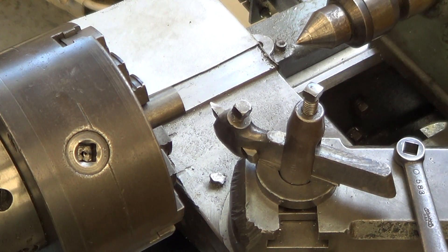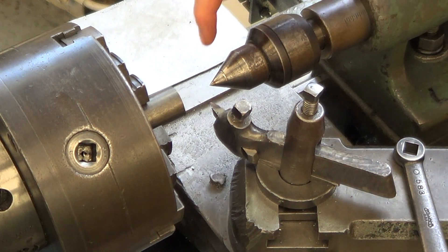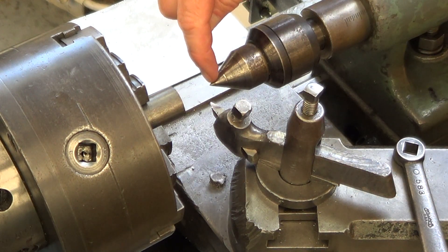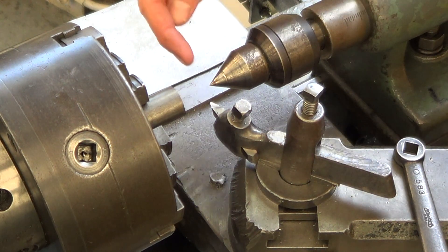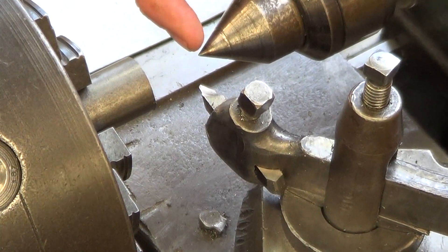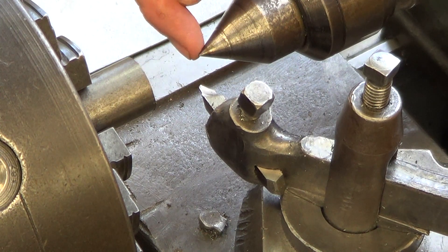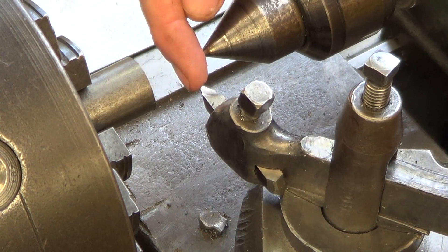To set the cutter at center height, you're going to use the tailstock with the live center loaded in the tailstock, because the very point of this right here is directly in the center of the spindle. So we use this point here to line up the point of our cutter.